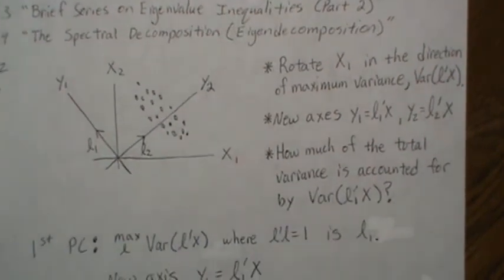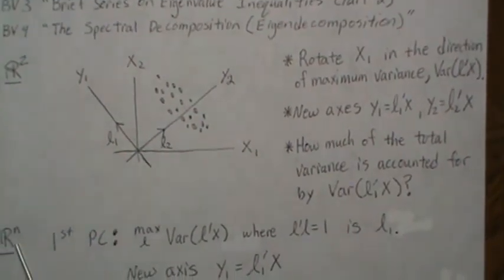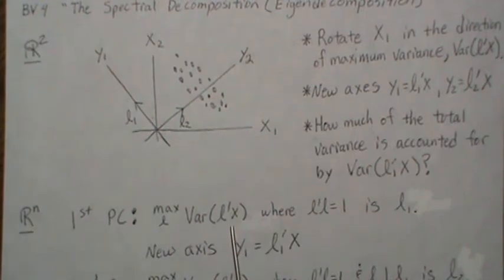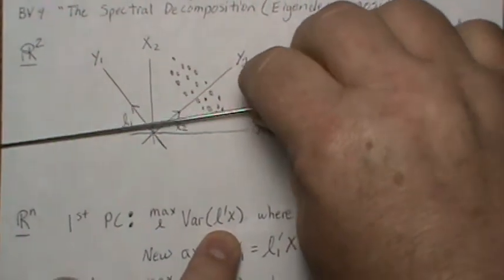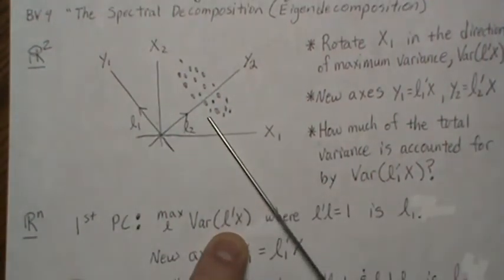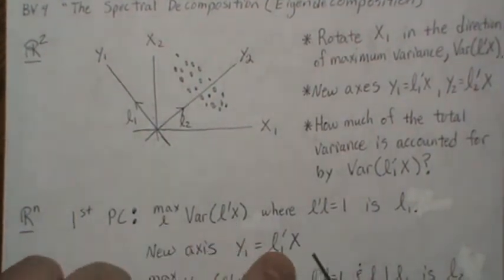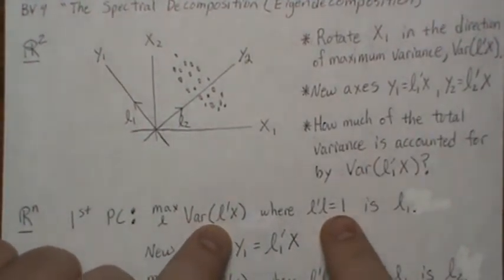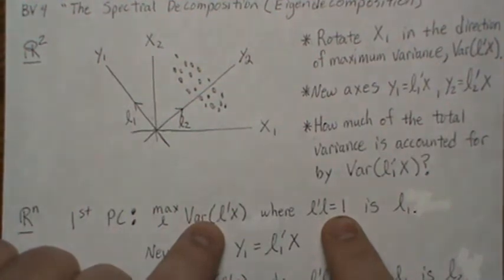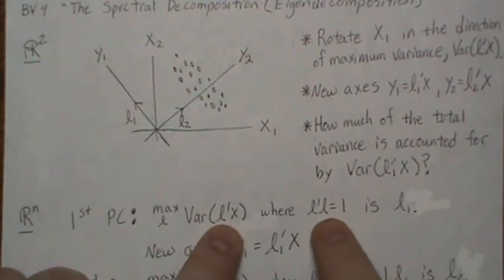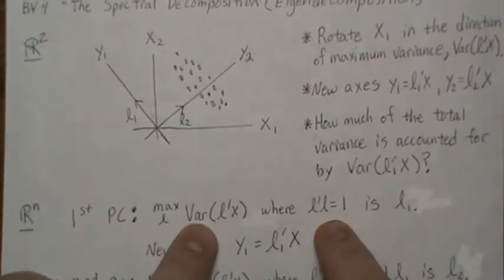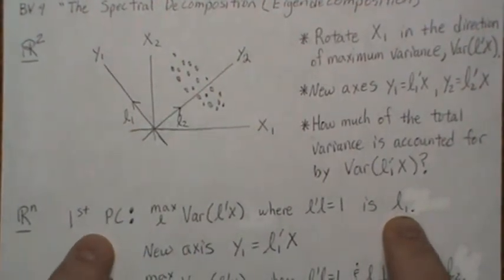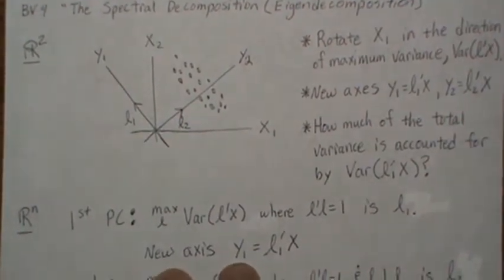Very generically, in n-space, to calculate the first principal component we want to maximize the variance of the linear combination L'X — that is, find the direction of maximum variance. It's subject to the constraint that the length of the vector L is one. We need that constraint because we could maximize the variance arbitrarily by using larger and larger constants, so we limit it to length one to get a definite value. L1 is the vector that maximizes this, and that's the first principal component — the new rotated axis is Y1 = L1'X.